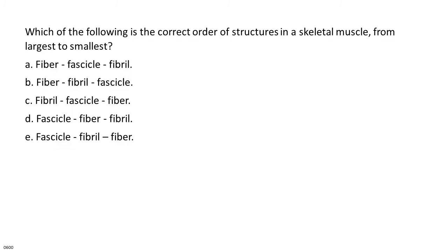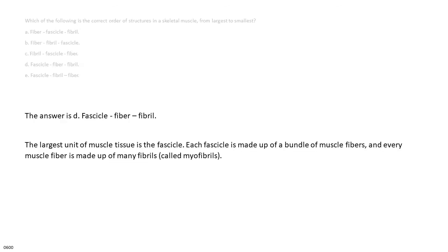Which of the following is the correct order of structures in a skeletal muscle, from largest to smallest? A. Fiber, fascicle, fibril. B. Fiber, fibril, fascicle. C. Fibril, fascicle, fiber. D. Fascicle, fiber, fibril. E. Fascicle, fibril, fiber. The answer is D, fascicle, fiber, fibril. The largest unit of muscle tissue is the fascicle. Each fascicle is made up of a bundle of muscle fibers, and every muscle fiber is made up of many fibrils, called myofibrils.